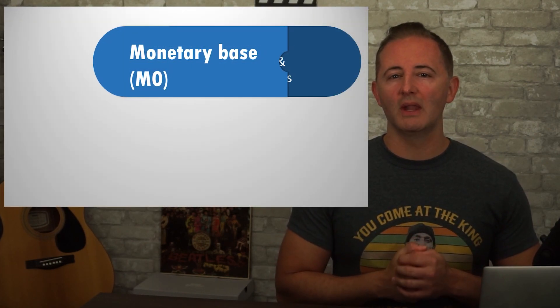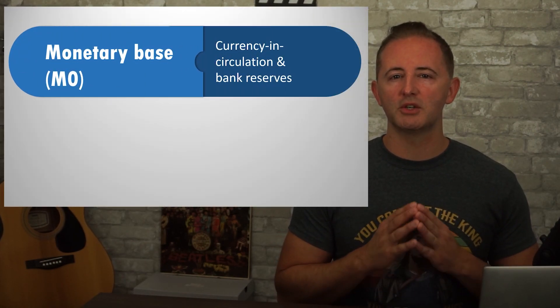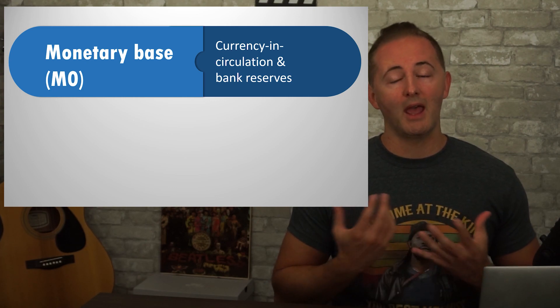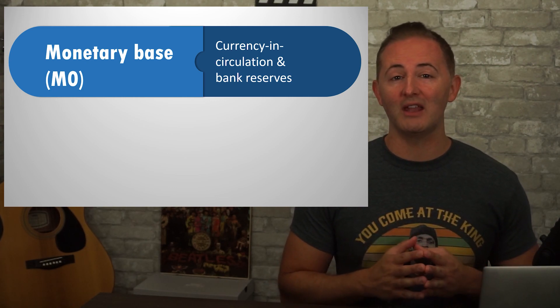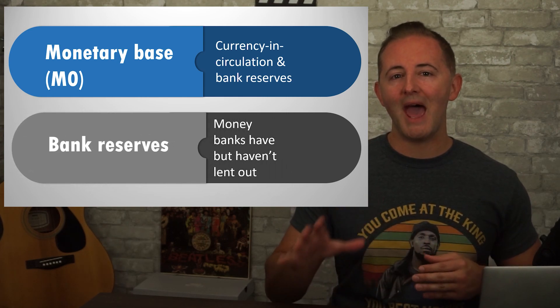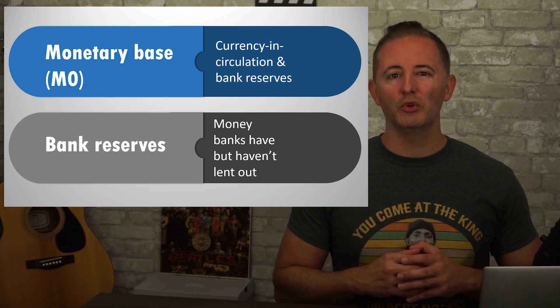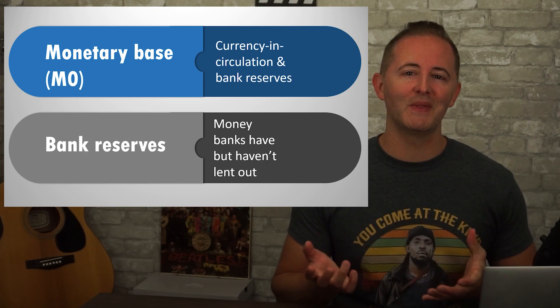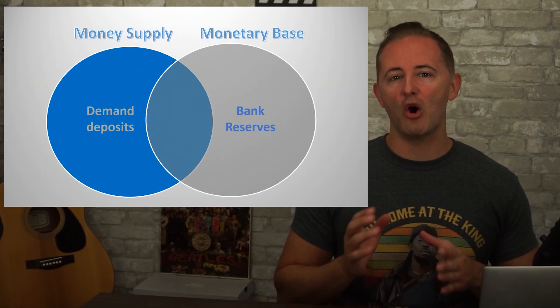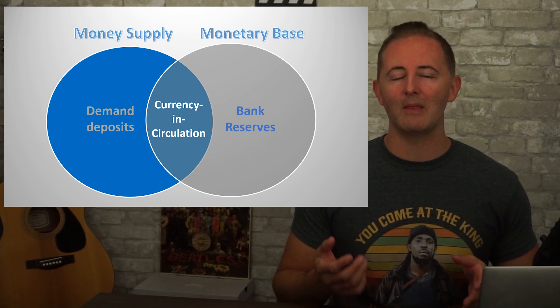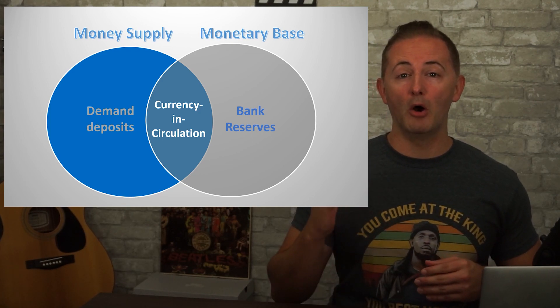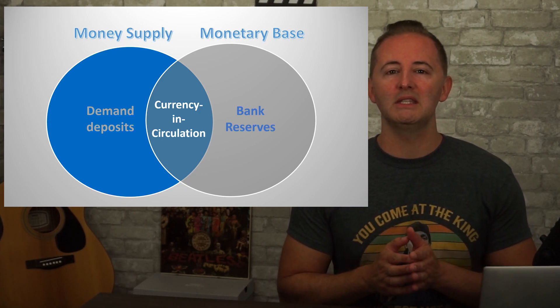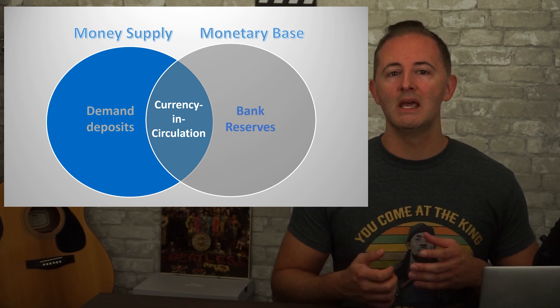Lastly, there's the monetary base, which is often labeled M0, and equals currency in circulation plus bank reserves. Bank reserves refer to money banks have but haven't lent out. We'll talk more soon about the significance of the monetary base, but for now enjoy this nice Venn diagram that shows the overlap between the money supply and the monetary base. They both include currency, whereas the money supply includes demand deposits, and the monetary base includes bank reserves. I promise all of this will pay off in the next couple of videos.